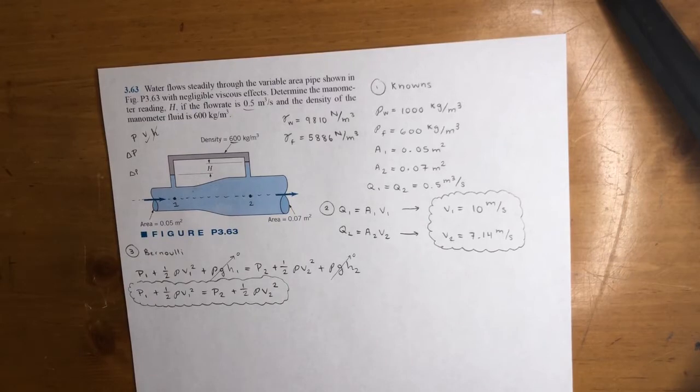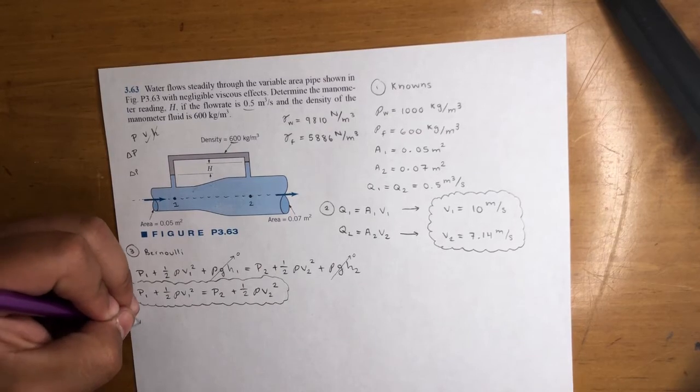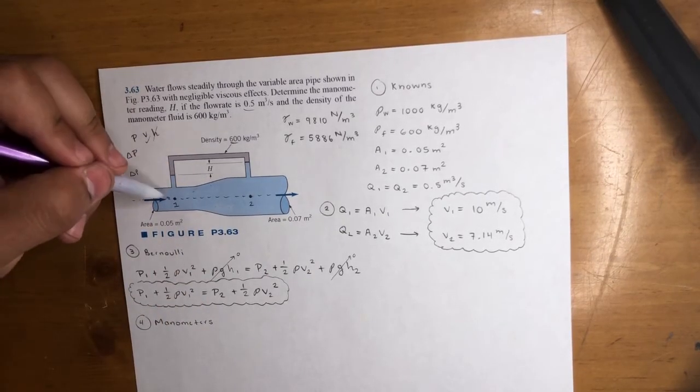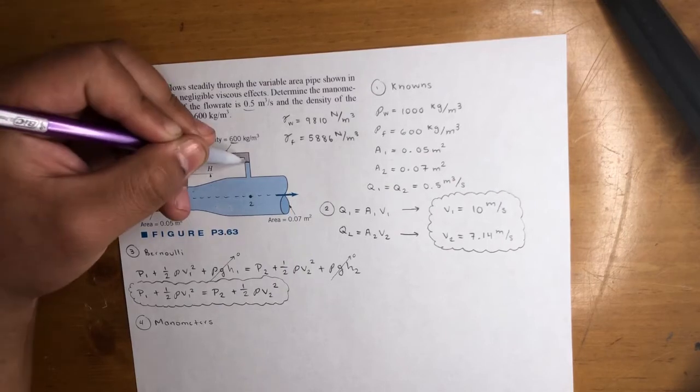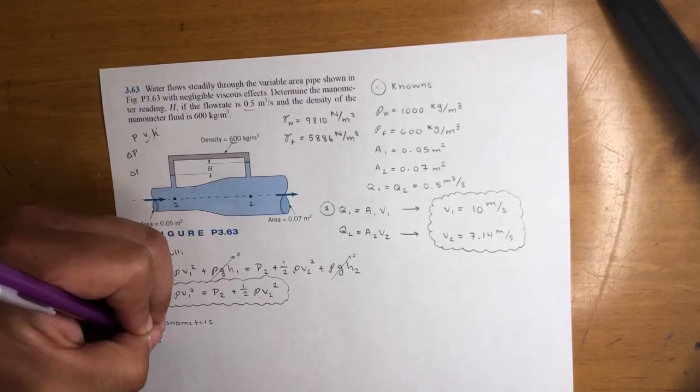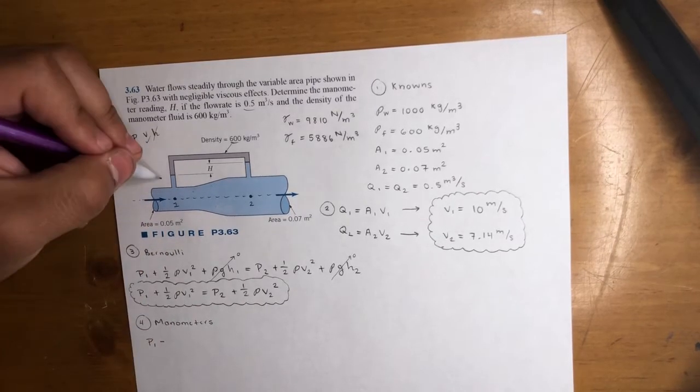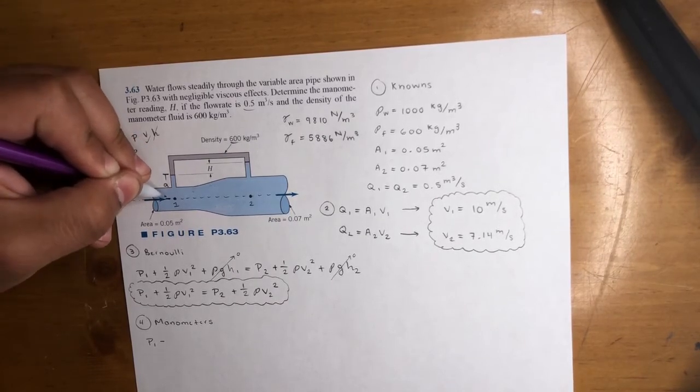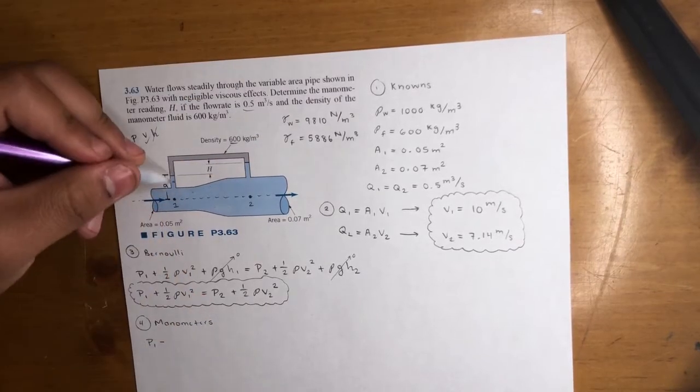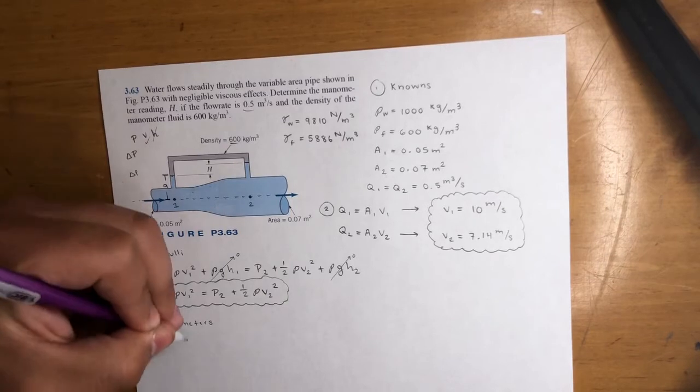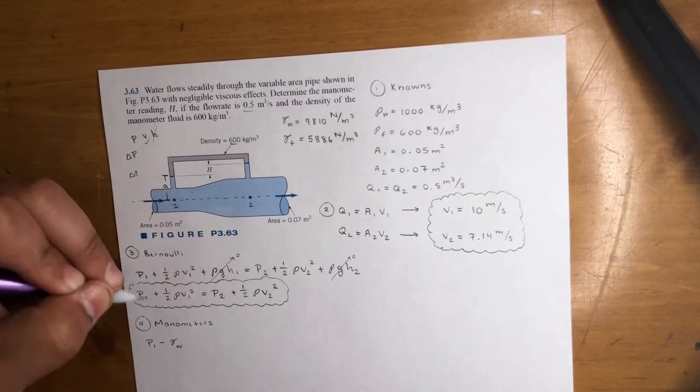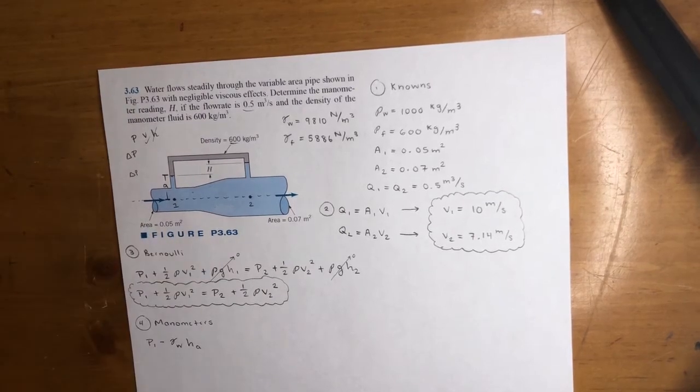Alright. So let's go ahead and do the manometers now. So from manometers - I'm not sure if you remember, but from manometers, we start at this point, go all around down to our final point, set it equal to the final point. So we start at P1. We're going up, so that's negative. We're dealing with water from here to here. Let's go ahead and label this A, some distance A. So it's P1, we're going up to this point. So it's minus gamma of water - this blue liquid is water - and then times your height, which is height A.